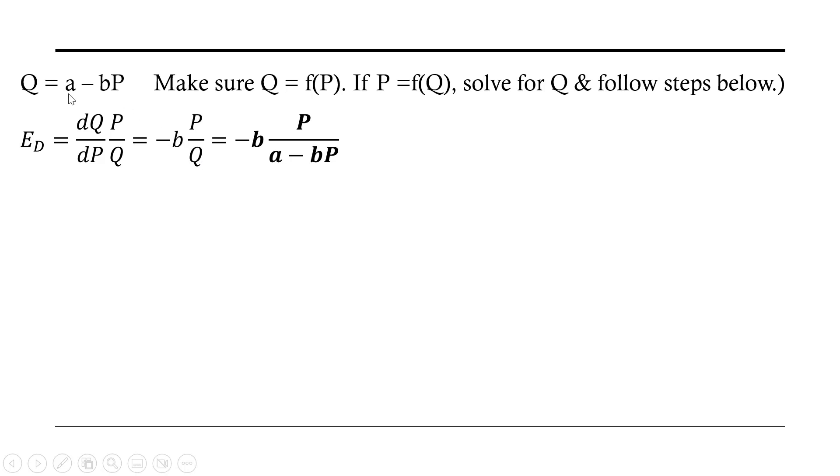For the Q, I'm just going to substitute in A minus BP. After all, the quantity demanded here, Q, equals A minus BP. So making that substitution. And in bold now, we have the general solution for the price elasticity of demand.